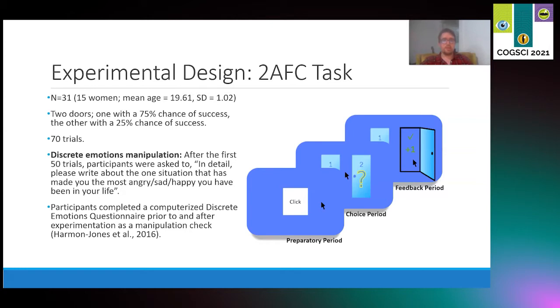To explore the potential modulatory effects that these emotions could have on decision making, we collected data from 31 participants using a two alternative forced choice task in which participants learned probability distributions of reward from two doors. One door had a 75% chance of giving a point which subjects were instructed to maximize, and the other had a 25% chance. Participants were to learn those probabilities over the course of 70 trials. During that, we collected choice behavior and reaction time.